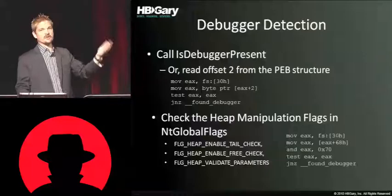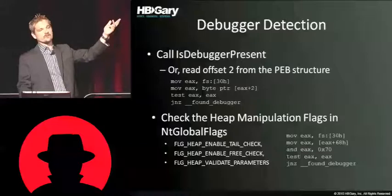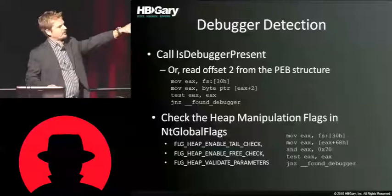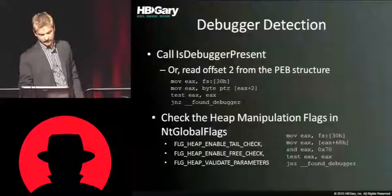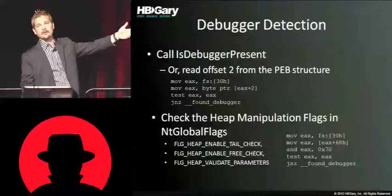IsDebuggerPresent is just a flag stored off the FS register, but people will make the API call which then just reads the flag. You can actually just read the flag directly too — I've seen code where it pulls the FS register directly without using the API call. Heap manipulation flags will also be different if debugging is present, and that's another technique used. You can see the assembly language used to make that test.